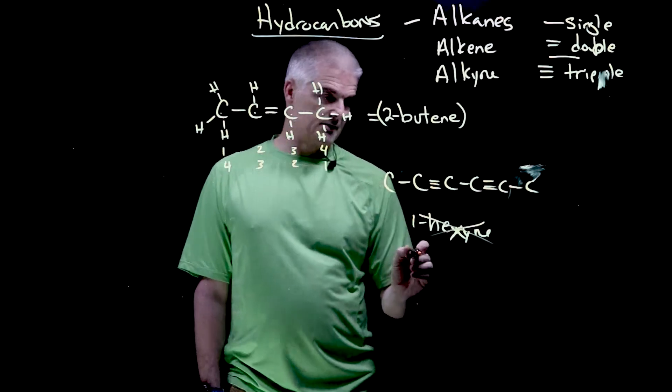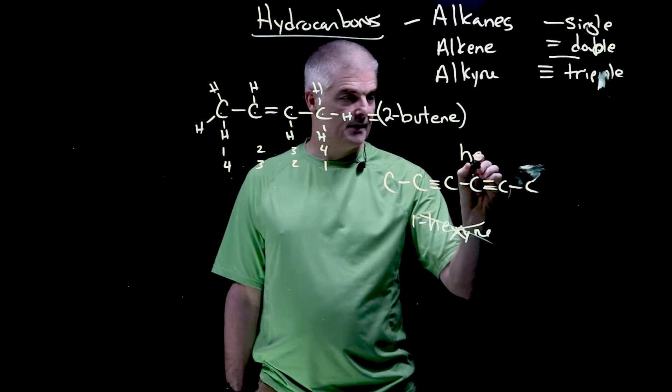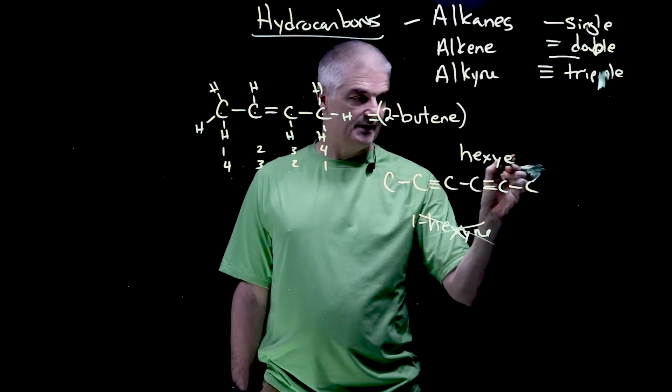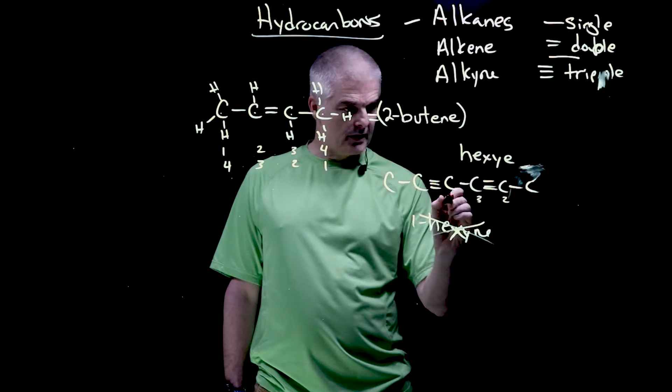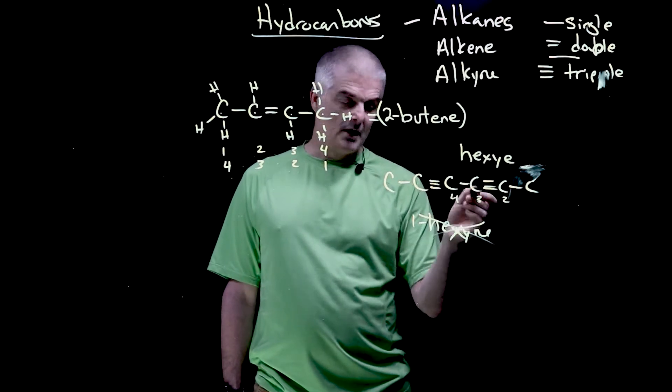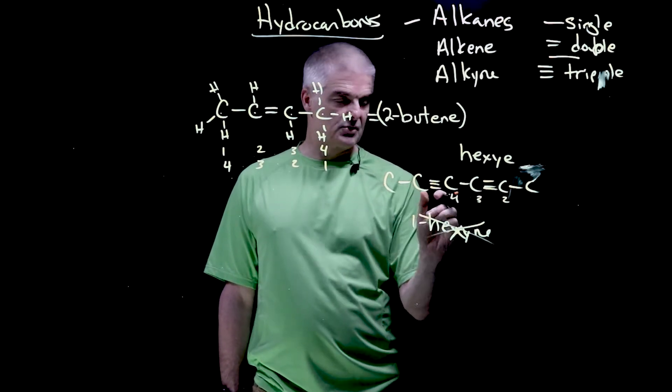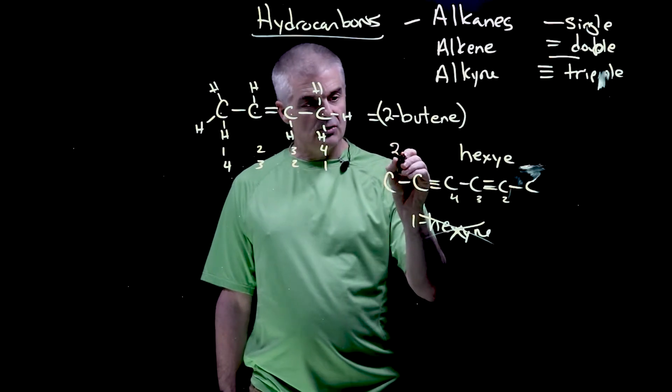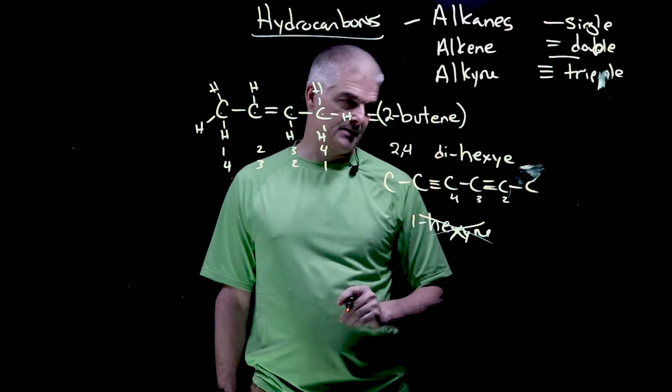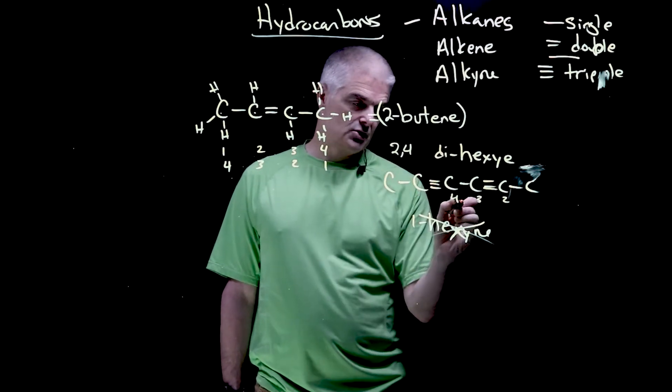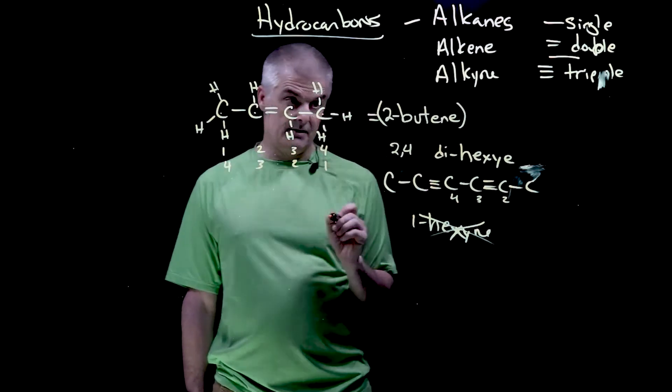So that's another long one hexyne, but it's still going to be hexyne, hex Y-N-E. And we've got it on carbon number two, three, four, two, three, four, there's both, it's symmetrical. So it's two, three, four. So you'd say two comma four dihexyne to indicate that there are two triple bonds.